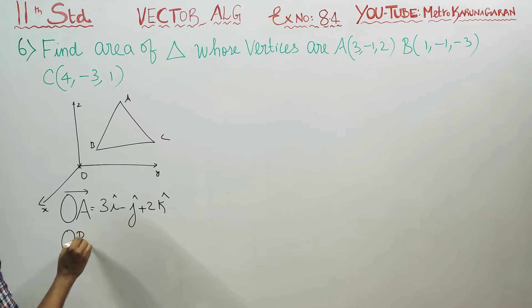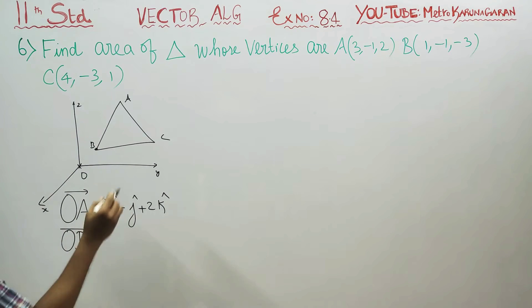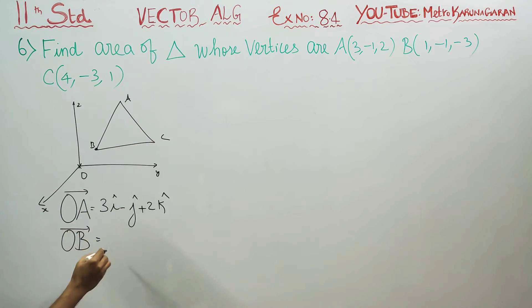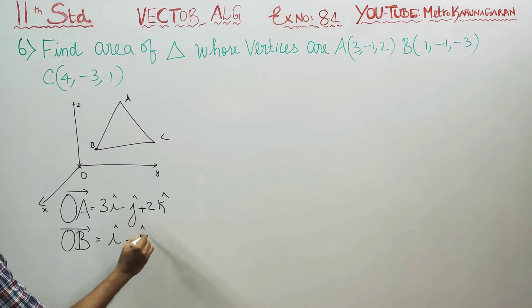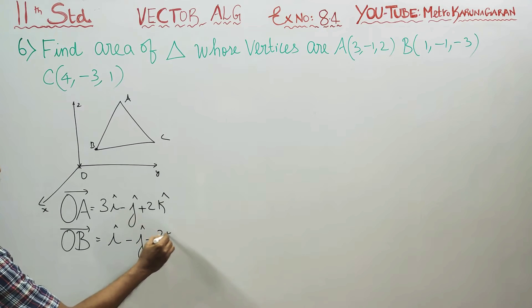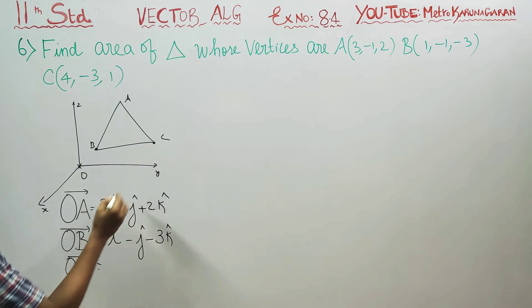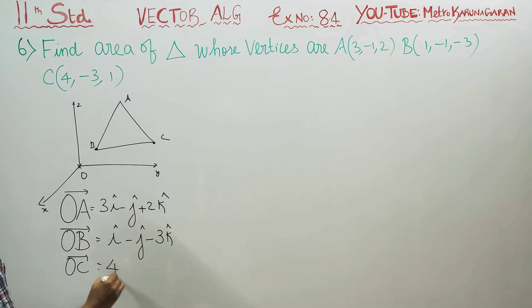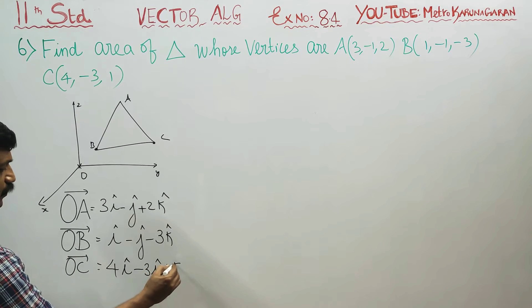Then, OB vector is the position vector of B. With the direction: i vector minus j vector minus 3k vector. Then OC vector — you have to add 4i minus 3j plus k. This is my OC vector.